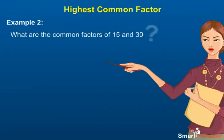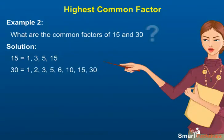Example 2. What are the common factors of 15 and 30? 1, 3, 5 and 15. Solution. The factors of 15 are 1, 3, 5 and 15.